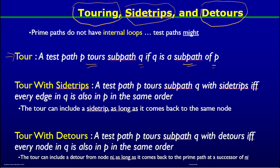A test path p tours sub-path q with side trips if and only if every edge in sub-path q is also in p in the same order. Simply stated, a tour can include a side trip as long as it comes back to the same node — meaning the test path can have some repeating nodes, but if it leaves a path and then comes back to the same node, we call that a tour with a side trip.